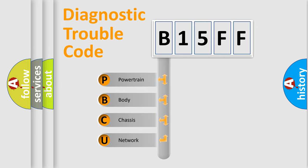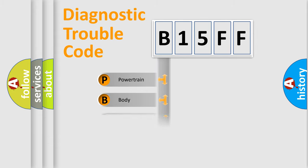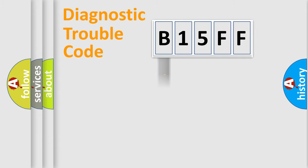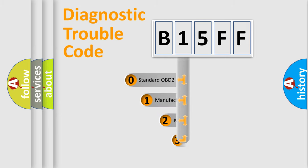We divide the electric system of an automobile into four basic units: Powertrain, Body, Chassis, and Network. This distribution is defined in the first character of the code.